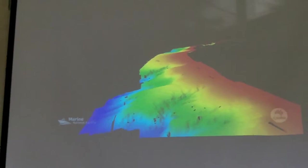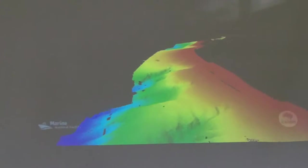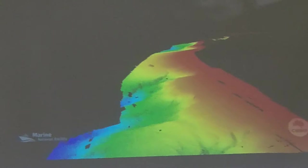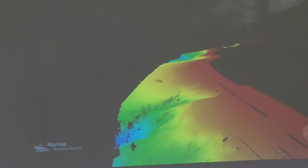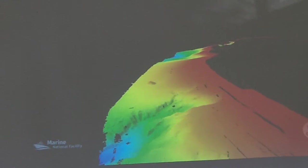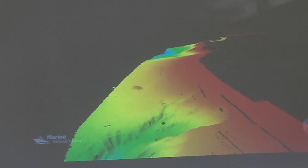So the red is the shelf. The yellow and green, that's the slope. Is the blue the rise? Well, actually, the yellow is the slope, and the green is the rise, and then the blue is the abyssal.